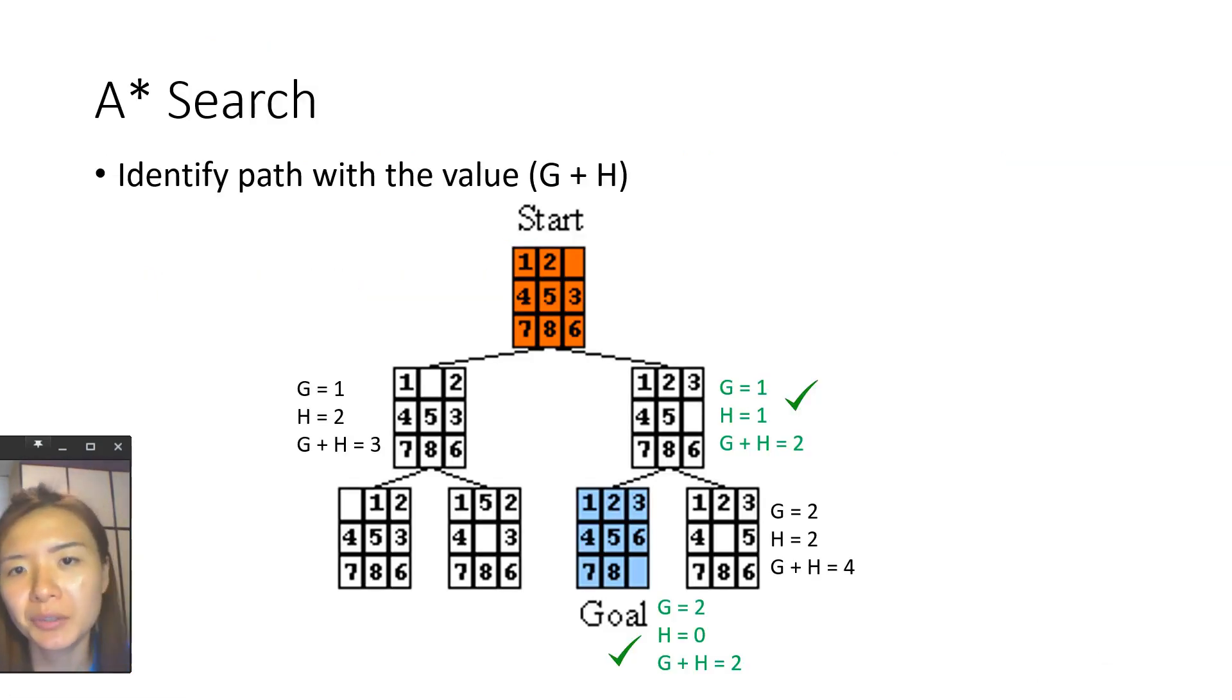A-star search uses the sum of G and H as a score to determine which step to go next. For example from the initial state we have two steps, either to move left with a score of three or to move down with a score of two. Two is smaller so you will decide to move down. From there you will continue to check on the score of the child nodes, to move down with a score of two or to move left with score of four. So you will move down and reach the goal state. And the game will end here.